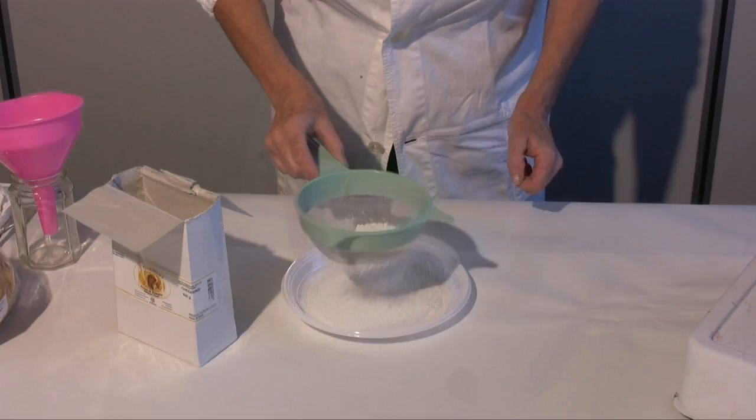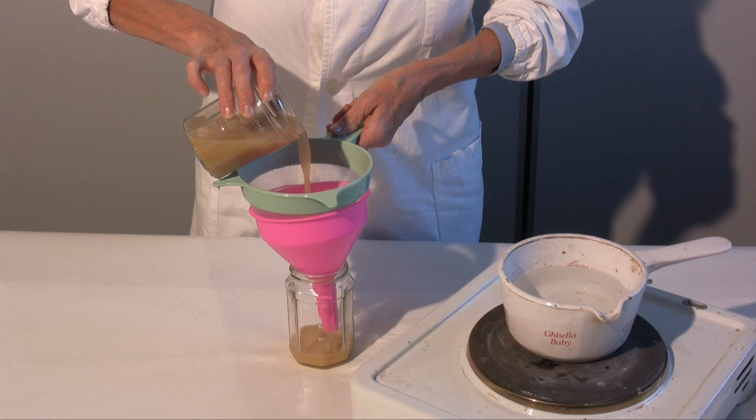Also the rabbit skin glue has to be sieved. For this process though the glue has to be liquid and it has to be at about 50 degrees of temperature.